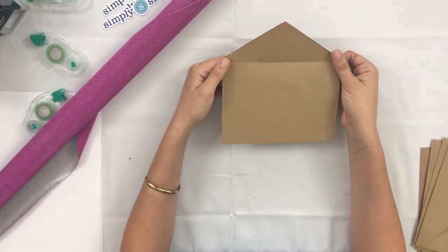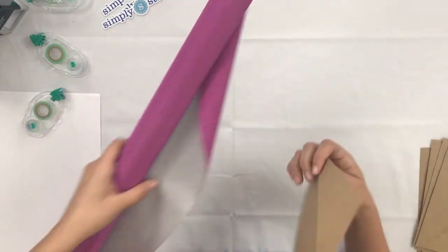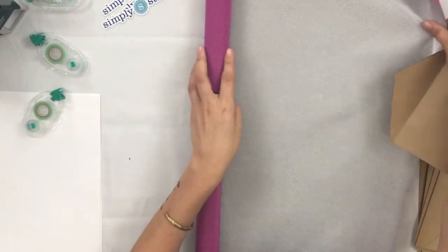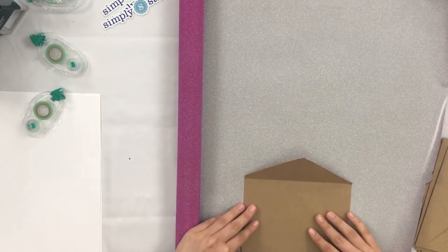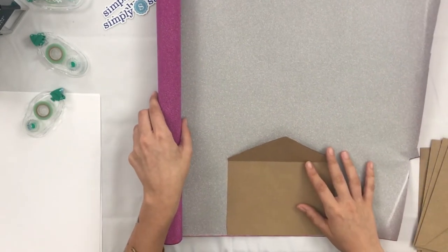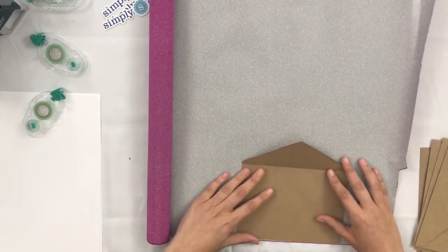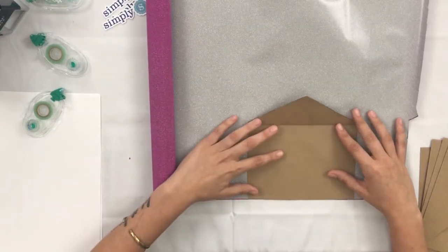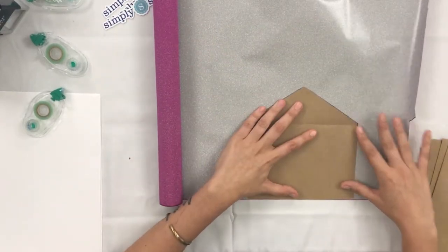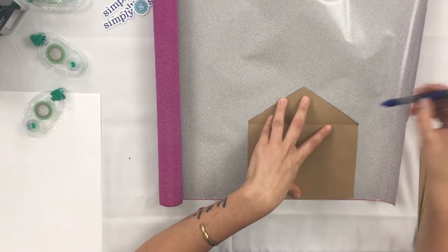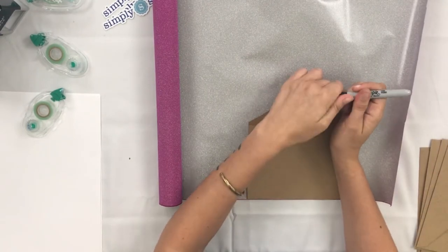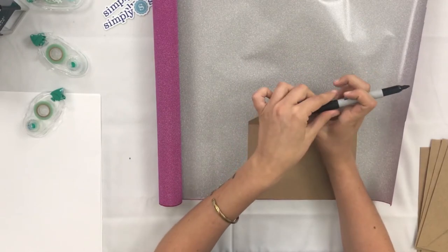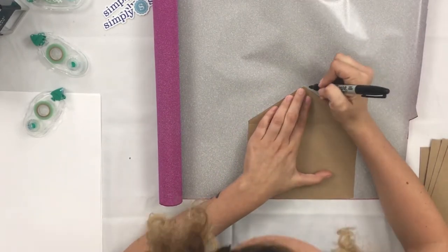And now that you have your liner completed, you're going to go ahead and take out the wrapping paper. And you're going to want to trace around the template onto your wrapping paper.